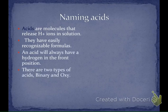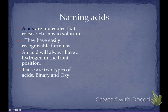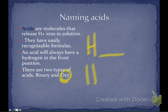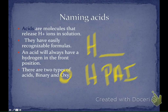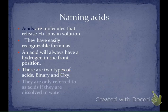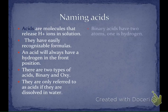We have two types. The first type is binary — the prefix 'bi' means two, so a binary acid has hydrogen and something else. An oxy acid would be hydrogen and a polyatomic ion. So we have two types of acids with two different ways of naming them. They're referred to as acids only if they're dissolved in water — we'll talk more about that later when we get into acids and bases.